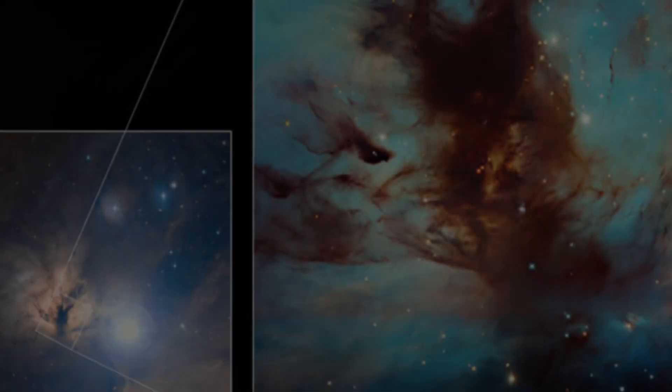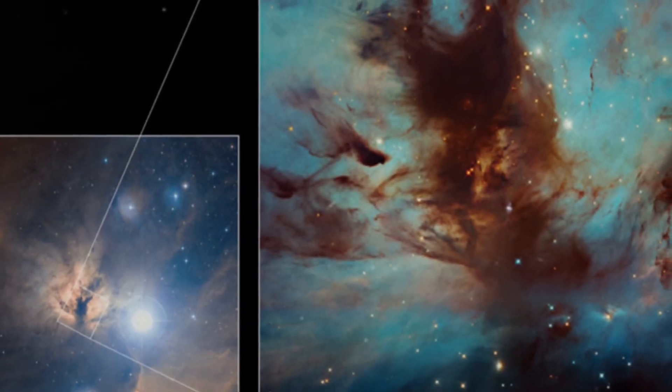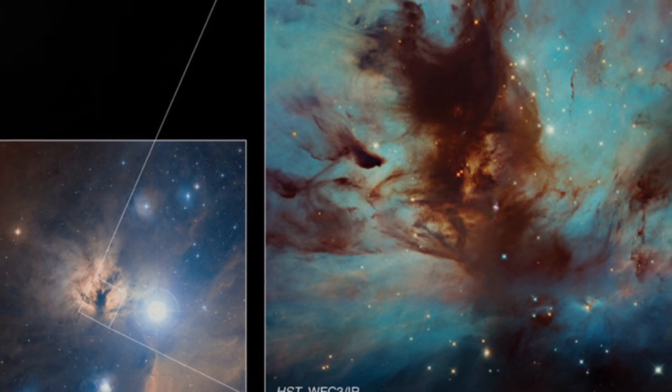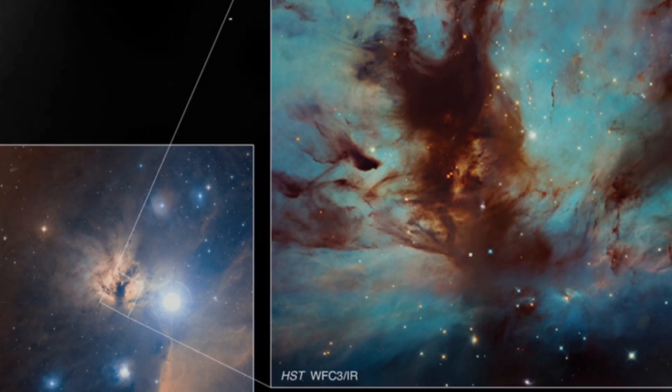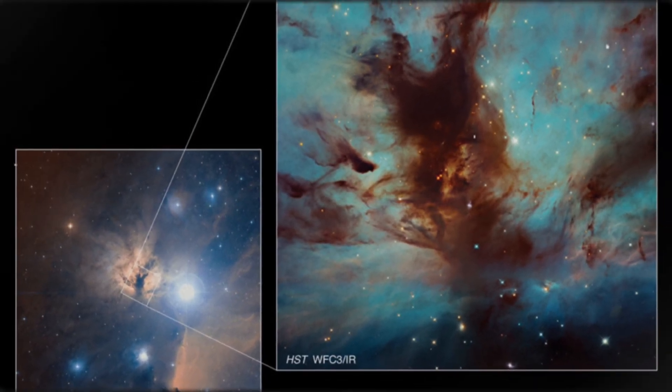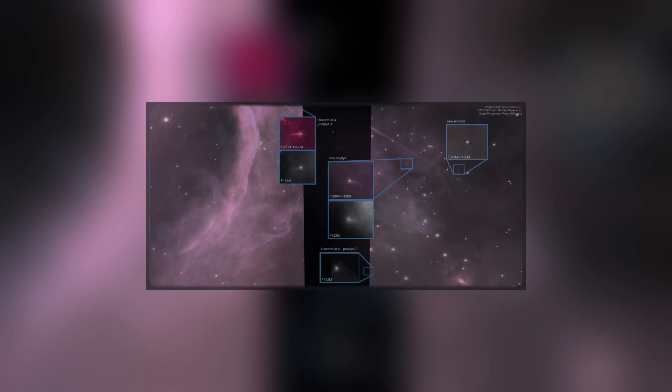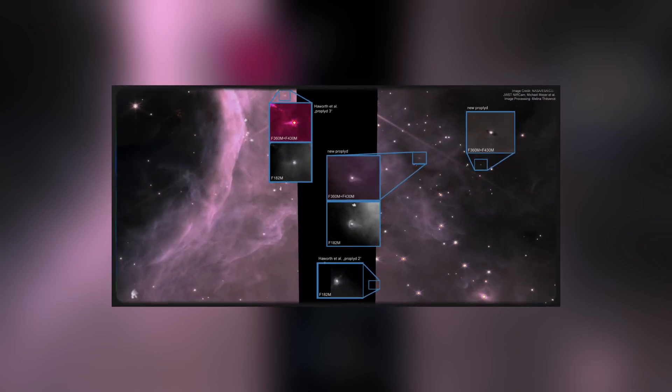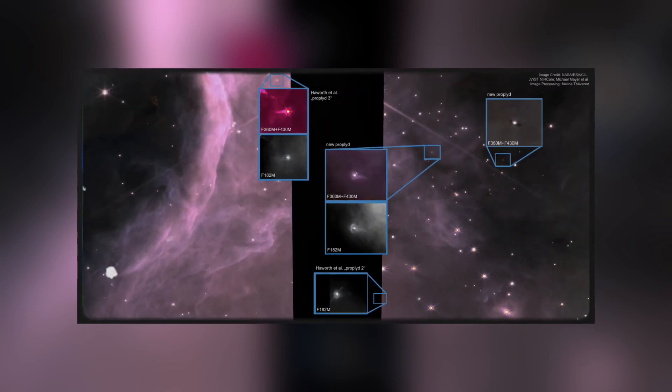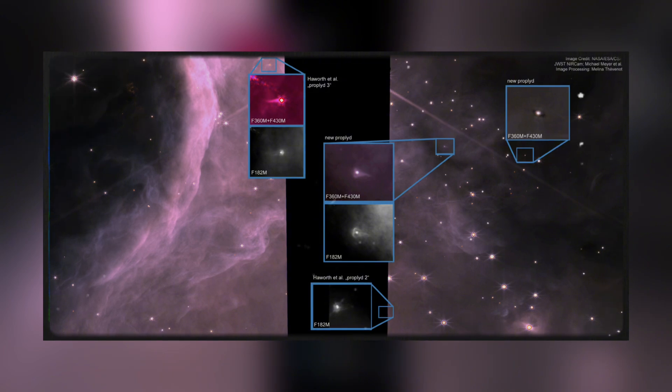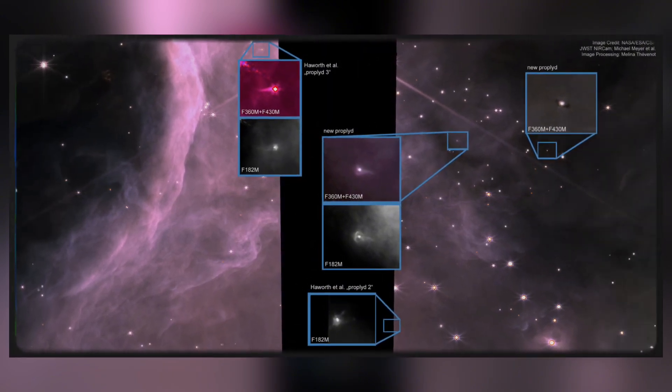In Hubble's view, the low-mass objects are barely visible, completely cloaked by the nebula's thick dust and gas. But then, Webb takes over. Its infrared vision cuts through the cloud, and suddenly, three low-mass objects come into focus—silent, faint, but unmistakably there.